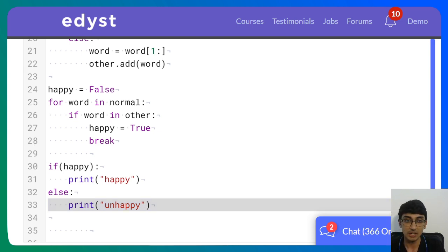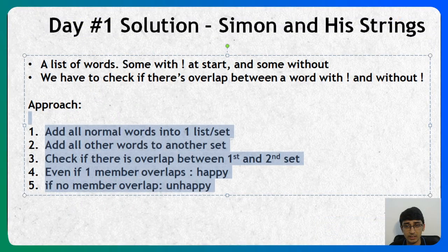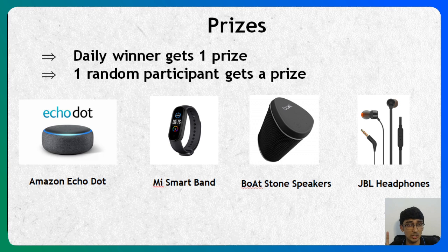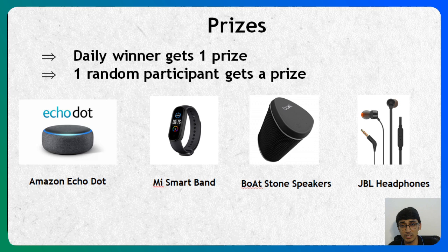Tomorrow — 9th June's daily challenge — comes out at 11 a.m. on 9th June, with more prizes up for grabs. Remember, it's not just the person who tops the leaderboard — one random participant also wins a prize, just as Harshita did today. Maybe you could be that random participant.